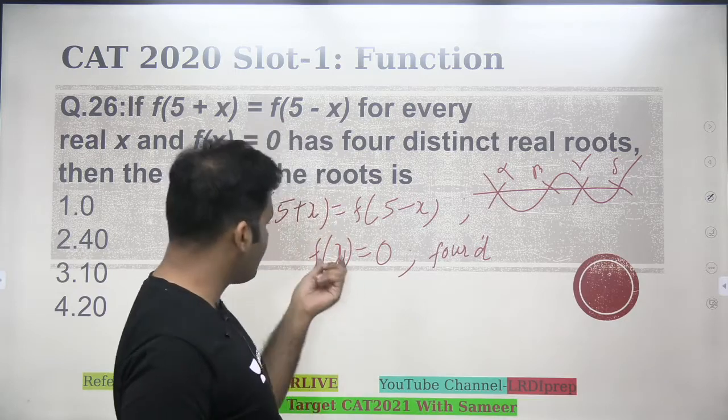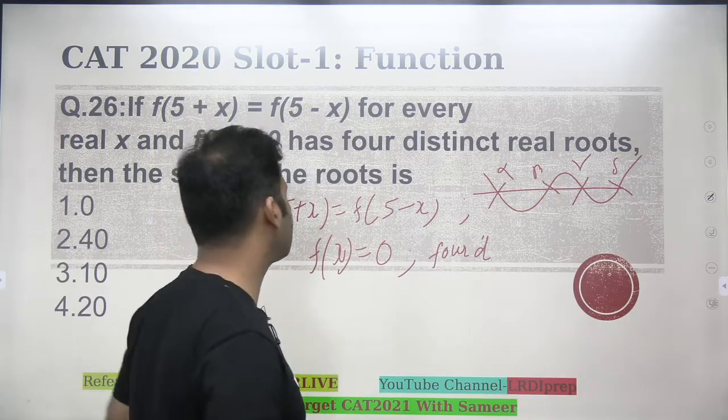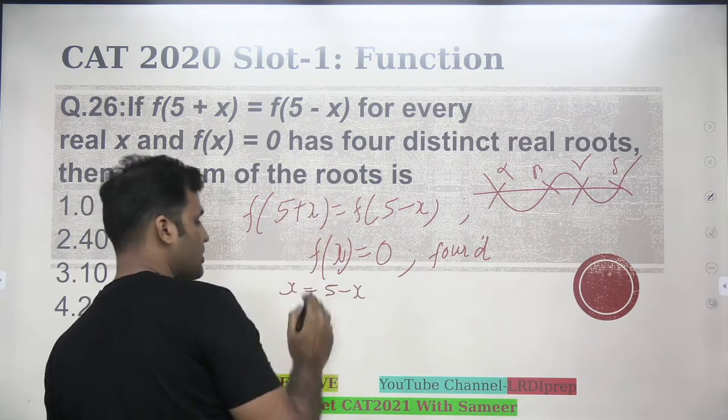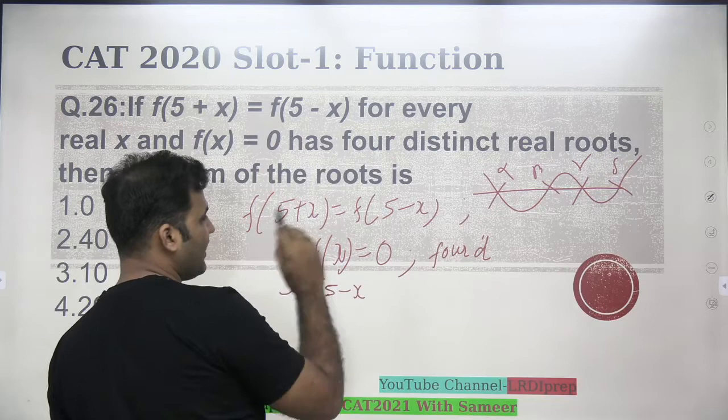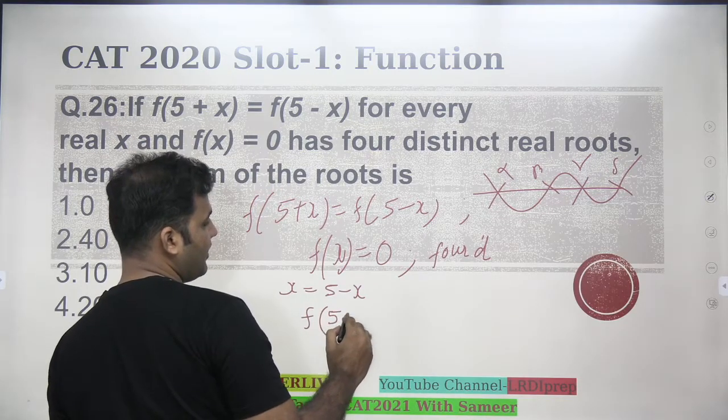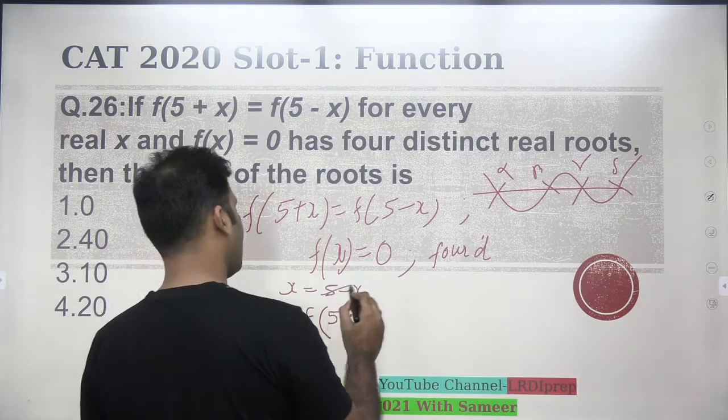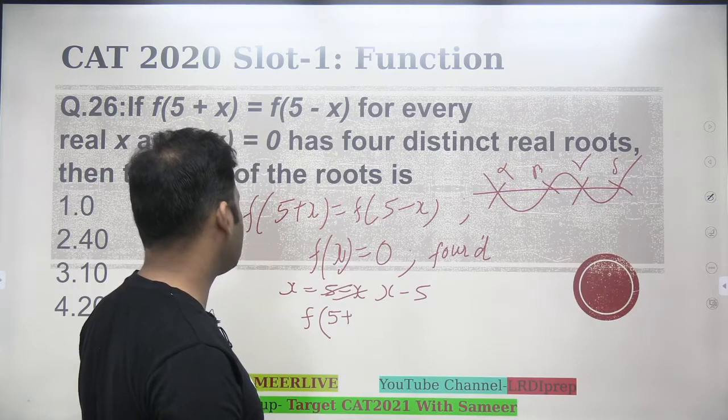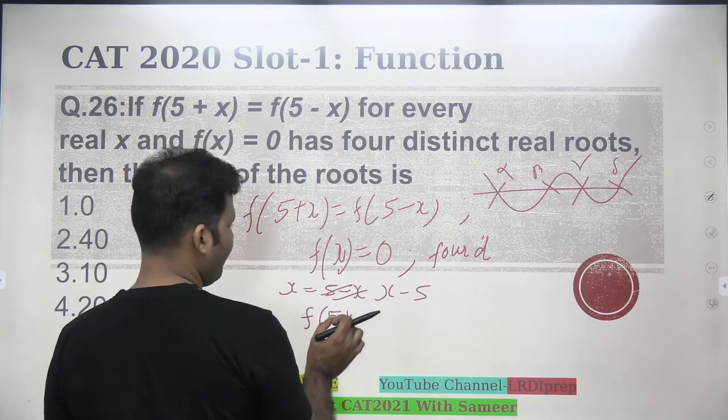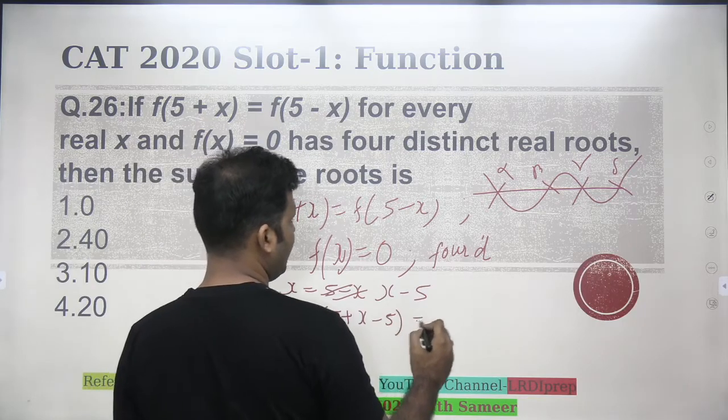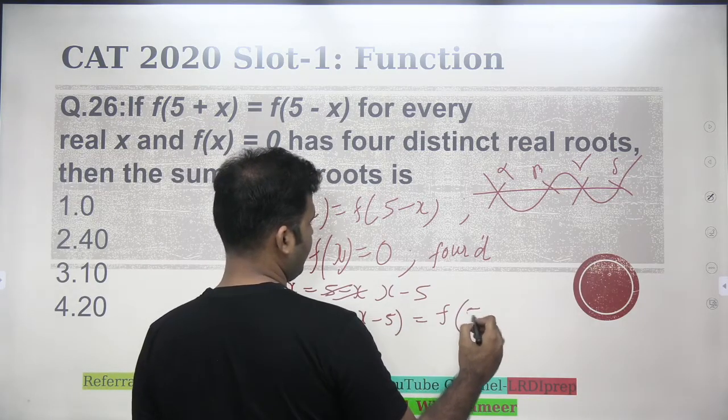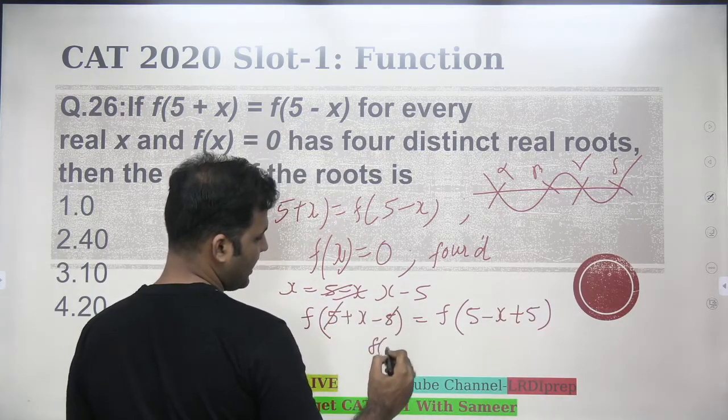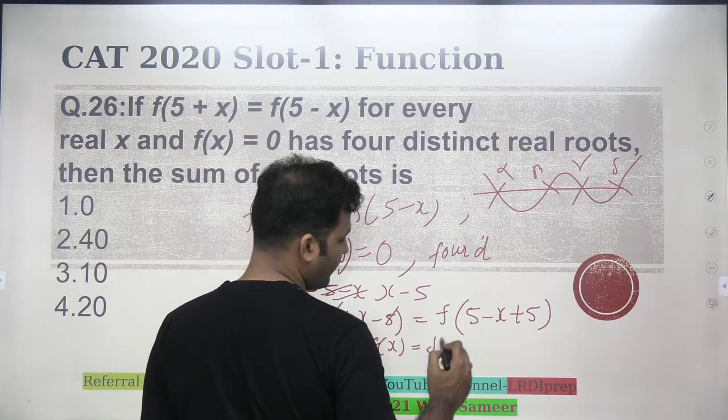Now, look carefully, if I want to find out how does f of x looks like, what you can do is, simply put x as x minus 5. So, we will find that f of x minus 5 will be equal to f of 5 minus x plus 5. That means 5 and 5 will get cancelled. You see that f of x is equal to f of 10 minus x.